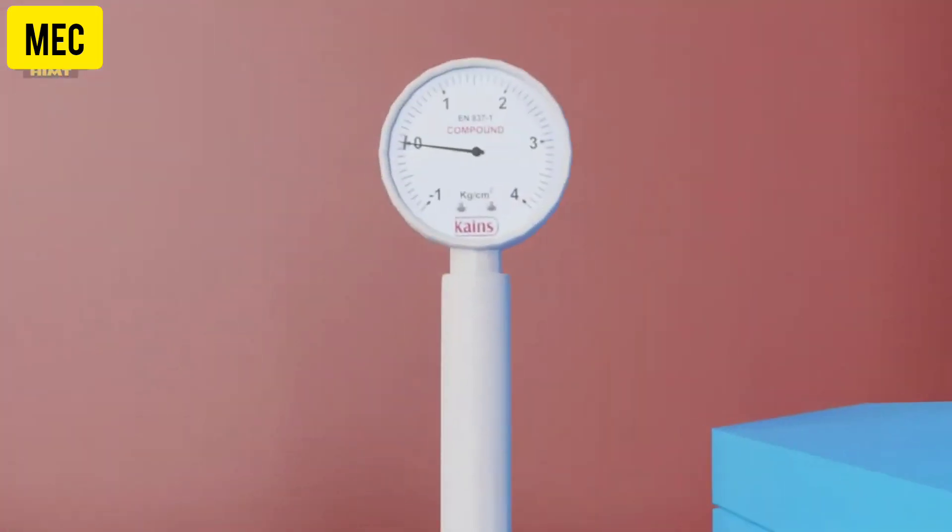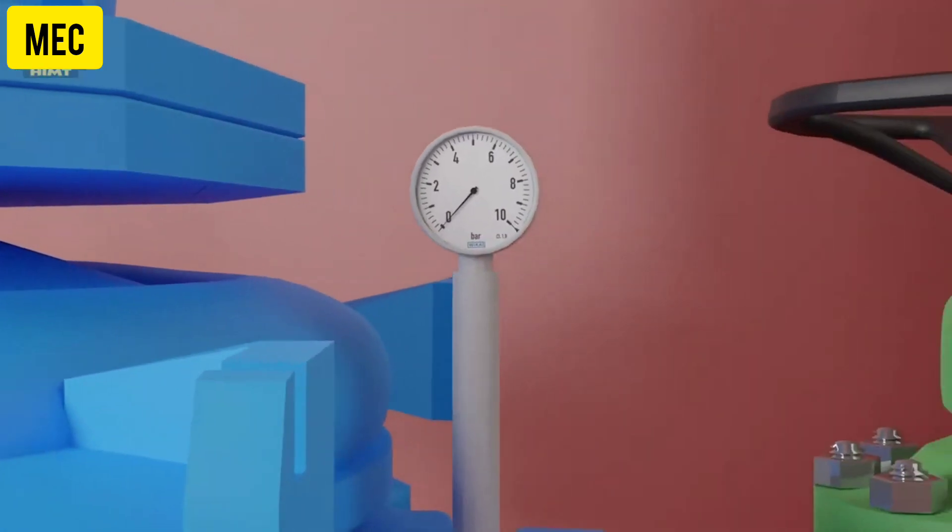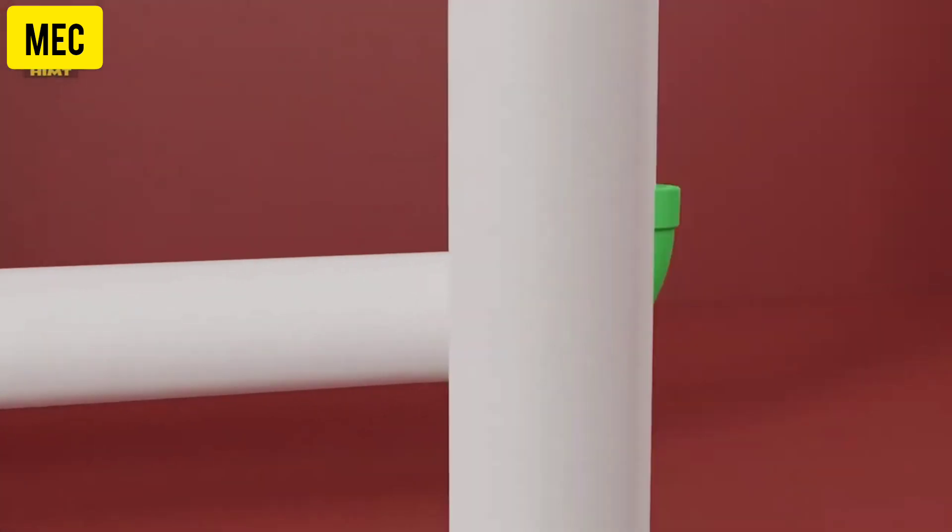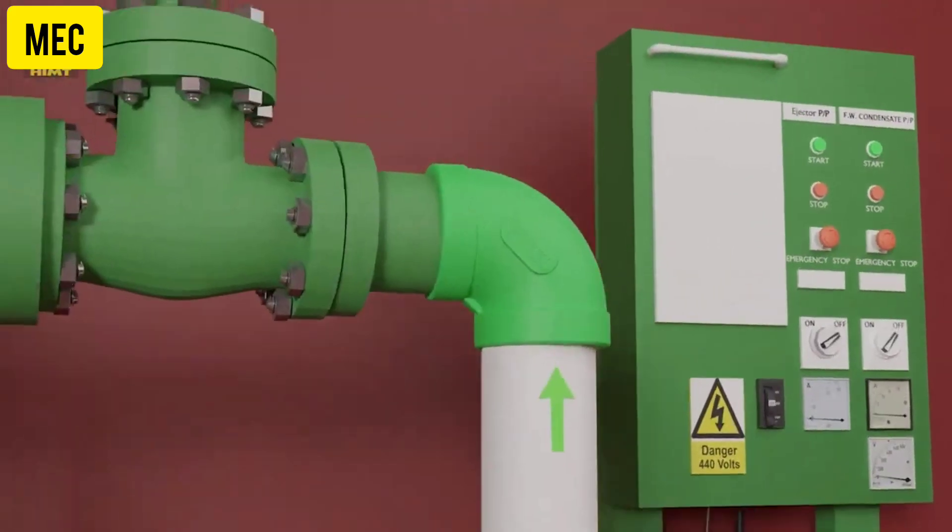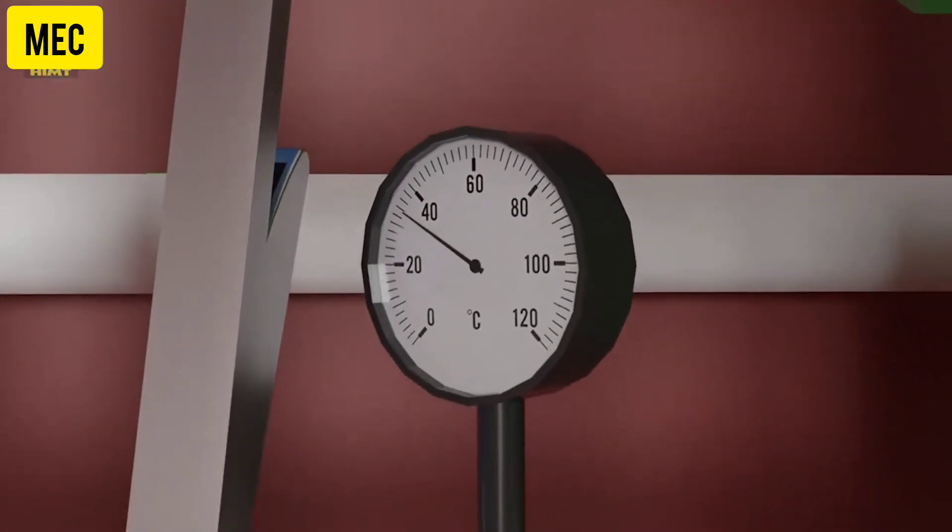This is the compound gauge at the ejector pump suction side. This is the pressure gauge at the discharge side of the ejector pump. We also have thermometers installed at the inlet and outlet of the jacket water, allowing for temperature monitoring and control during the distillation process.